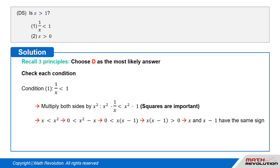Condition 1 tells us that 1 over x is smaller than 1. If we multiply both sides of this inequality by x squared, we get x squared times 1 over x is smaller than x squared times 1, or x is smaller than x squared. A square is important in this case — always think of squares when solving inequality questions. Rearranging, we get 0 is smaller than x squared minus x.